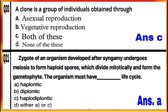Question 20: A clone is a group of individuals obtained through what? The term clone is used to describe morphologically and genetically similar organisms obtained during various asexual methods of reproduction, where a single individual participates in the process. So the correct answer is C — clone is a group of individuals obtained through both asexual reproduction and vegetative reproduction.